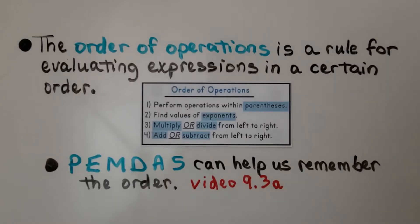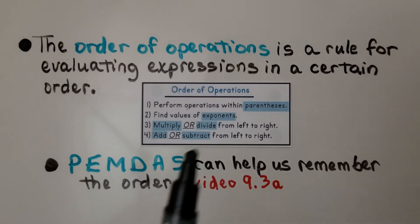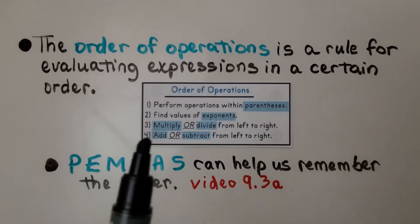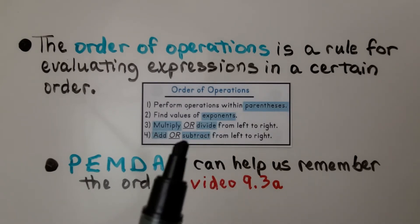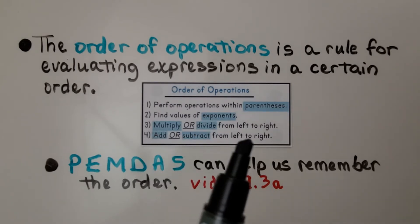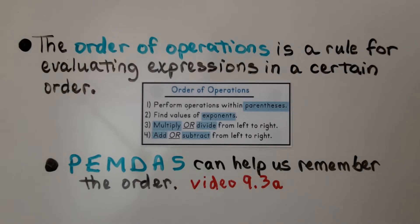The order of operations is a rule for evaluating expressions in a certain order. PEMDAS can help us remember the order: parentheses, exponents, multiply or divide from left to right, add or subtract from left to right. We learned this in the previous video, 9.3a, which is linked in the description.